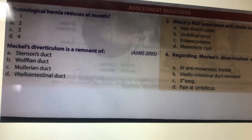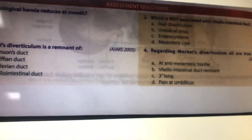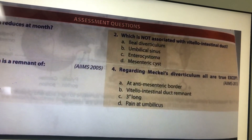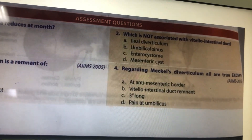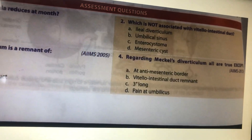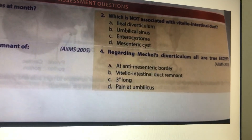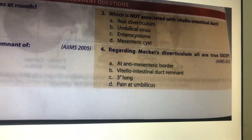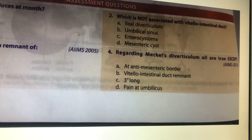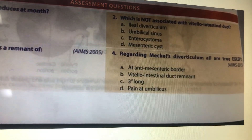Meckel's diverticulum is a remnant of the vitello-intestinal duct. Structures not associated with vitello-intestinal duct include mesenteric cyst. Regarding Meckel's diverticulum: it is always present on the anti-mesenteric border, is a remnant of the vitello-intestinal duct, and is two inches long — not three inches. It can mimic appendicitis with periumbilical pain.